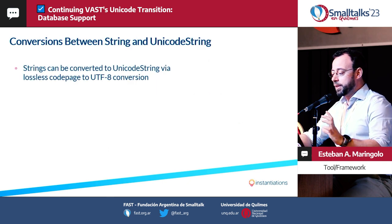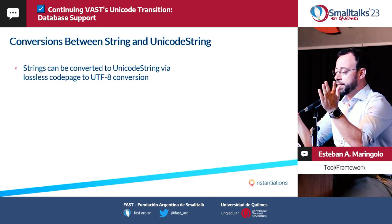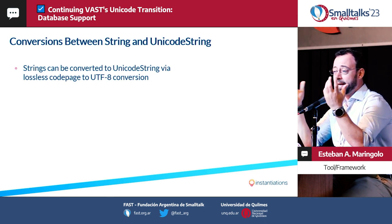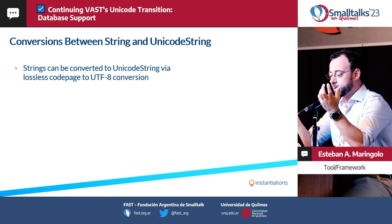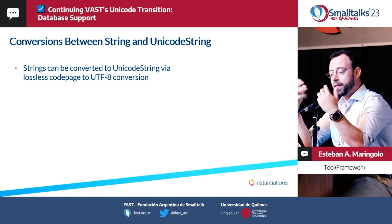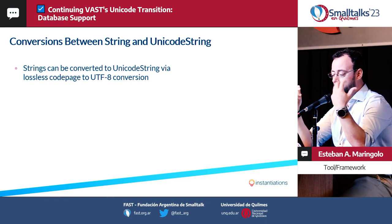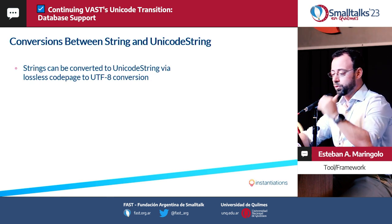It's worth mentioning that there are only a few programming languages that support what is considered the grapheme cluster. We took inspiration from Rust and Swift, which have the best implementations available. Our implementation is based on Rust primitives, and we added all the ergonomics to make it feel natural for Smalltalk developers. You will likely have both types of strings coexisting, and there are ways to convert from one class of string to the other.